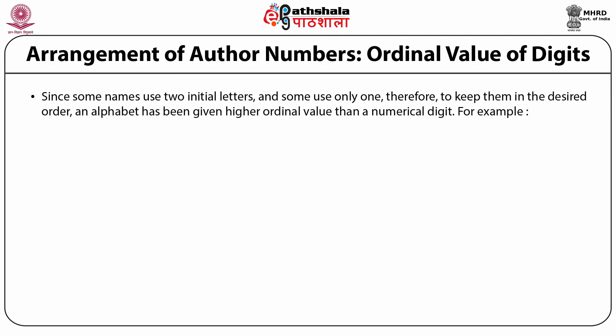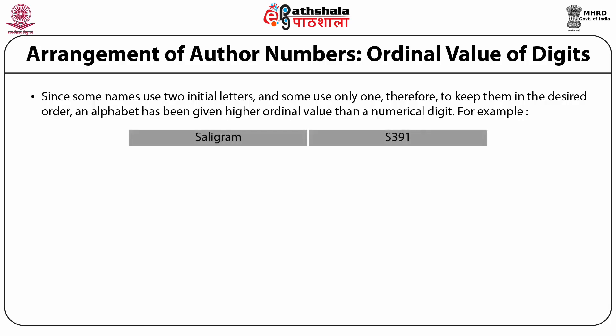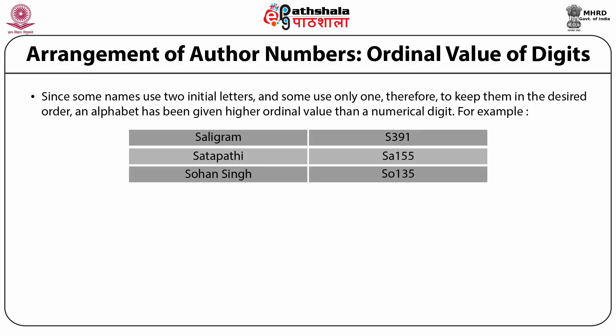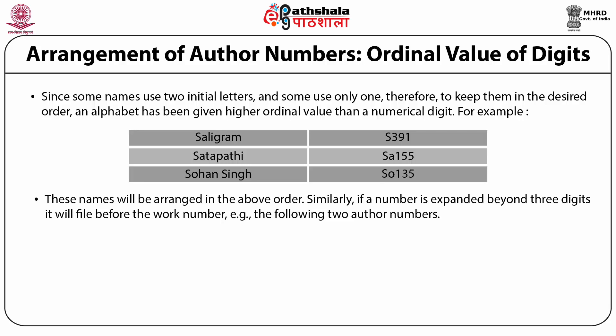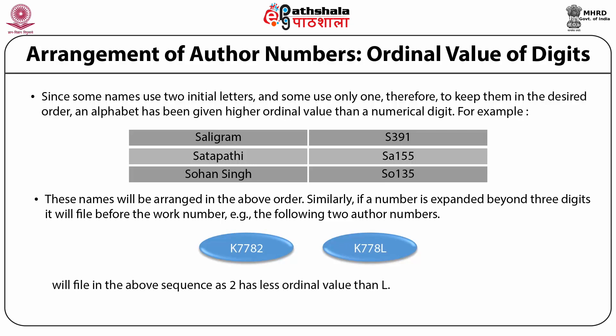Regarding the arrangement of author numbers and the ordinal value of digits used: since some names use two initial letters and some use only one, to keep them in the desired order, an alphabet has been given a higher ordinal value than numeral digits. For example, Soligram gets S391, Satpasi gets SA155, and Sosingal gets SO135 — these names will be arranged in this order, meaning A has more value than the numeral 3. Similarly, if a number is expanded beyond three digits, it will file before the work number. For example, K77782 and K7778L will file in that sequence as 2 has less ordinal value than L.